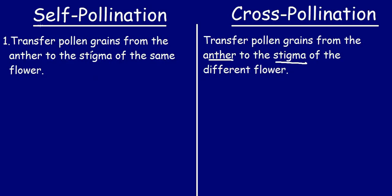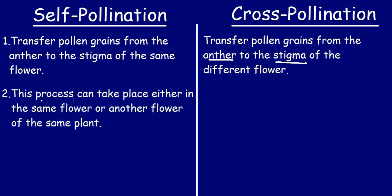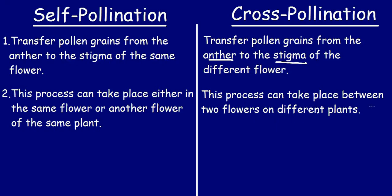Moving on to the second point: for self-pollination, this process can take place either in the same flower or another flower of the same plant. For cross-pollination, this process can take place between two flowers on different plants.